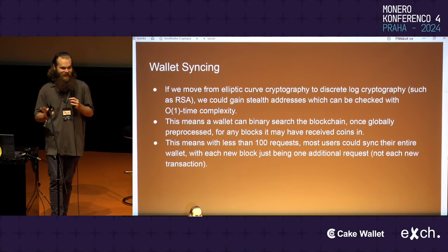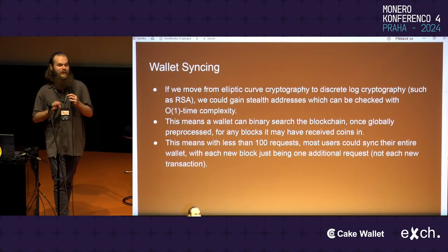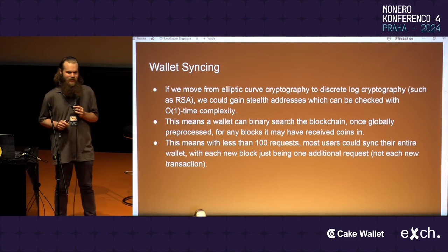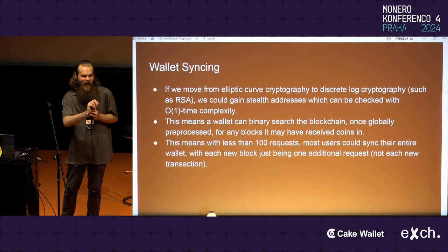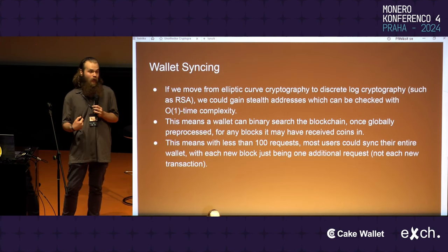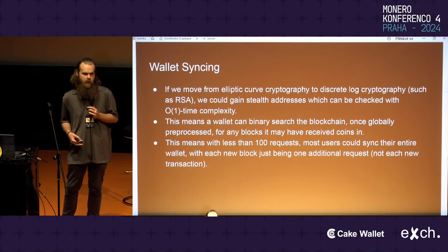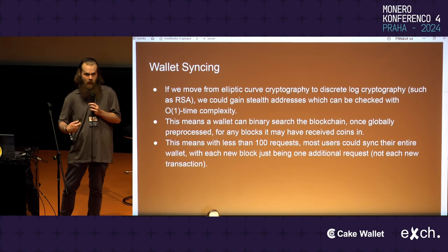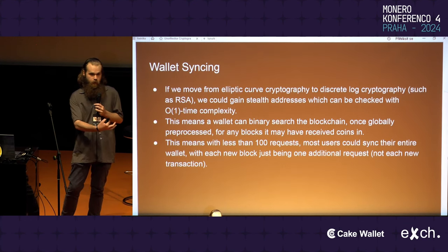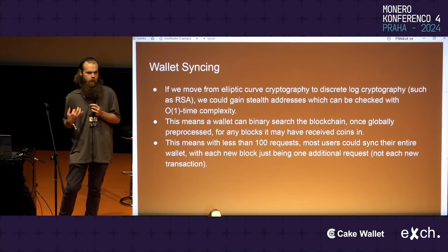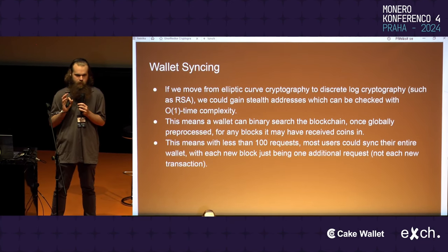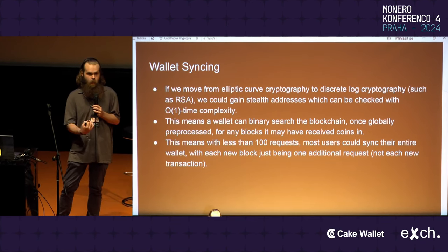If we move from elliptic curve cryptography to something that might as well be RSA, we could gain stealth addresses which are O(1) to check. This means if you have a million outputs, you could immediately see if any of them were to you. If one of those million is yours, you can immediately partition them — are the first 500,000 the ones containing the output to me, or is it the second 500,000? Within a million outputs containing one of yours, you'd be looking at about 25 requests to a wallet server to sync through one million outputs.